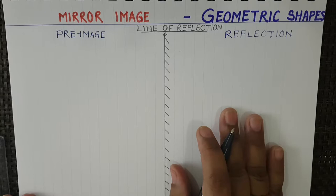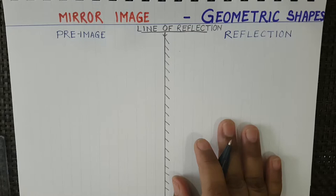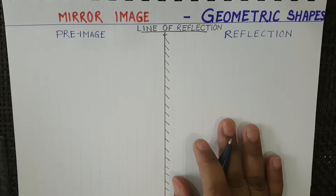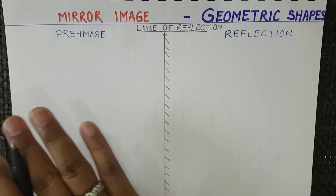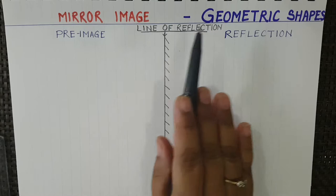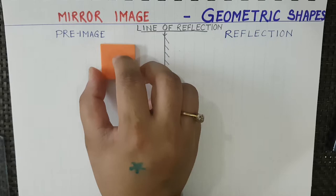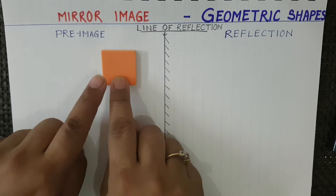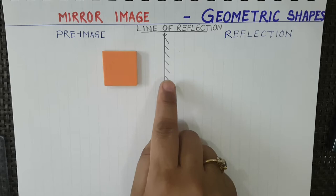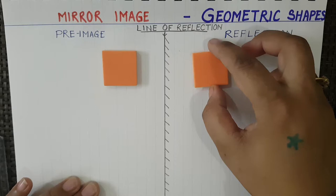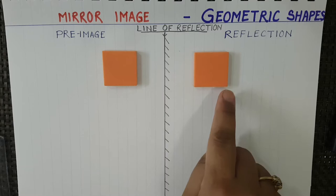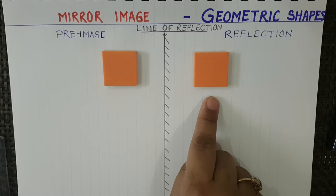Now we will see how the reflection of shapes is formed. In geometry, a reflection is a transformation where a shape is flipped. Flipped means the shape is changed — it is turned over to make the mirror image.